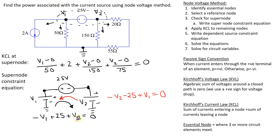Looking at these two equations, they are essentially identical — multiplying one equation by minus one gives the other. This shows that the assumed direction does not matter. We now have two equations and two unknowns, which can be easily solved.